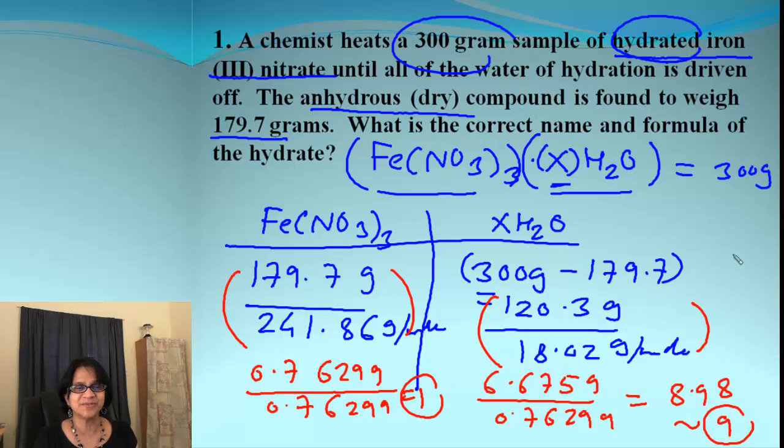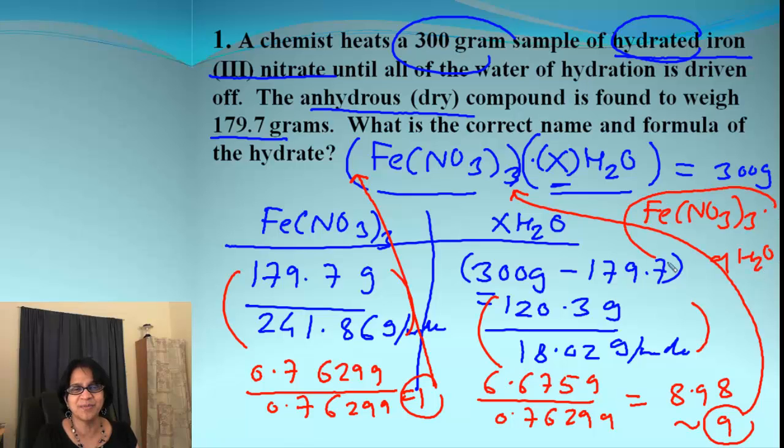And when we simplify that we end up getting 8.98 or when we round up that will be 9. So we got the empirical formula ratio as 1 to 9. Now remember that 1 is for anhydrous and that 9 goes for water. We got the formula Fe(NO3)3·9H2O. So there are 9 molecules of water in that hydrate.